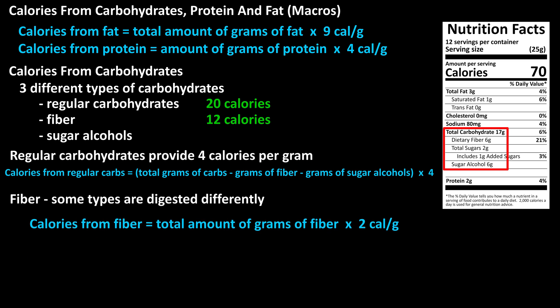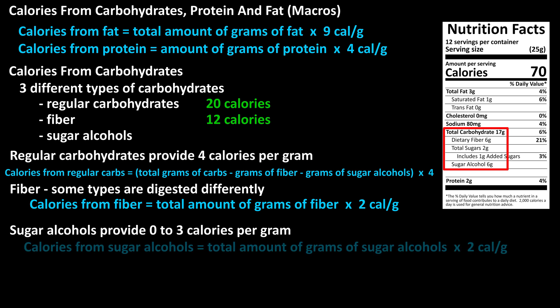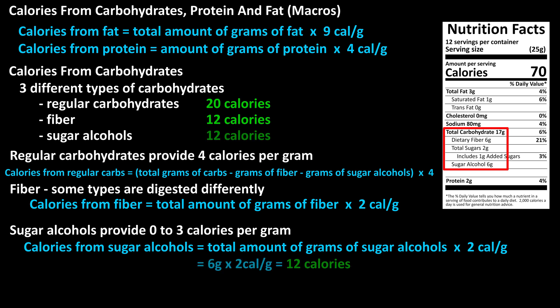Now for sugar alcohols. Sugar alcohols are a type of carbohydrate that contains zero to three calories per gram, depending on the type of sugar alcohol. To make it easier to calculate, just estimate two calories per gram for sugar alcohols. On our example label, it lists sugar alcohols at six grams, so six grams times two calories per gram equals 12 calories from sugar alcohols.